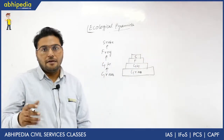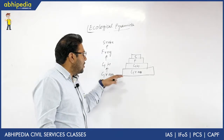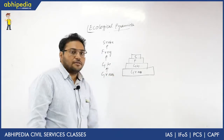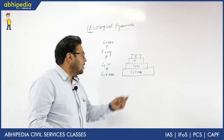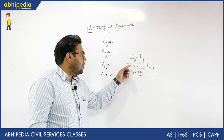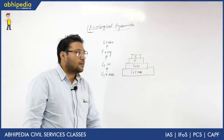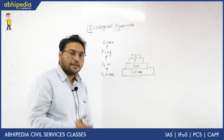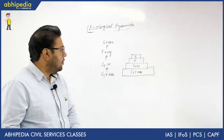An ecological pyramid is basically a graphical representation of different types of organisms and their relationships — grass is related to grasshopper, grasshopper is related to frog, and frog is related to snake.